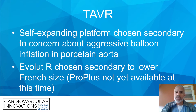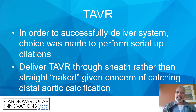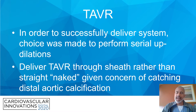The Evolute R was chosen secondary to the lower profile as well. The ProPlus was not yet available at the time of this case. In order to successfully deliver the system, the choice was made to perform serial up-dilations. We decided to deliver the TAVR through the sheath rather than a straight naked approach, given the concern of catching the distal aortic calcification.